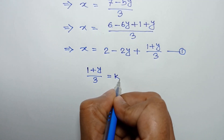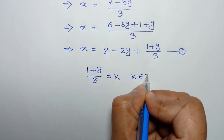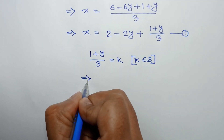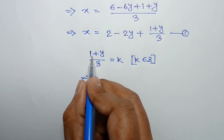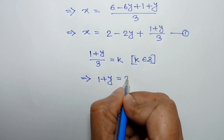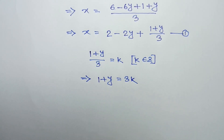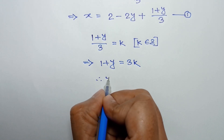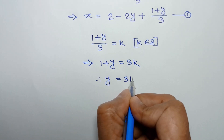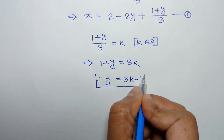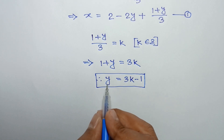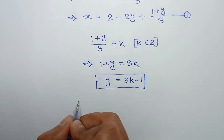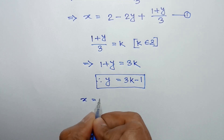Consider 1 + y/3 = k, where k is an integer. Multiplying both sides by 3, we get 1 + y = 3k, so y = 3k - 1. This is the value of y.